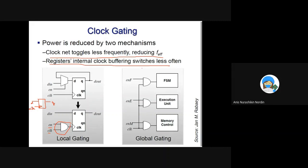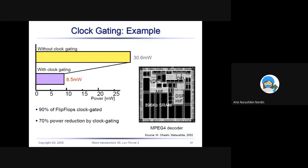This is the example: you have a chip, this is the MPEG decoder, it has SRAM, the digital signal processor, DDE, MIF, and all these other functionals. If they put the flip-flop, 90% of the flip-flops they put a gate at the clock, it can reduce the power. Without clock gating, you see here the power is 30.6 milliwatts, and with clock gating the power is much reduced to 8.5 milliwatts. So there is a 70% power reduction by clock gating.